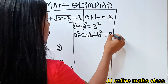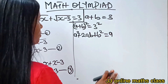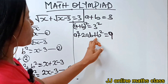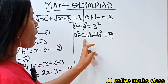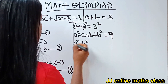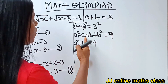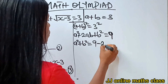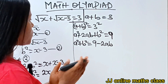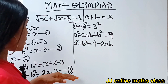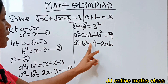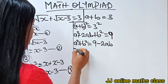Three squared gives us 9. Now let's bring a² + b² together and move 2ab to the other side, so we have: a² + b² = 9 − 2ab. Recall from equation three that a² + b² = 2x − 3.